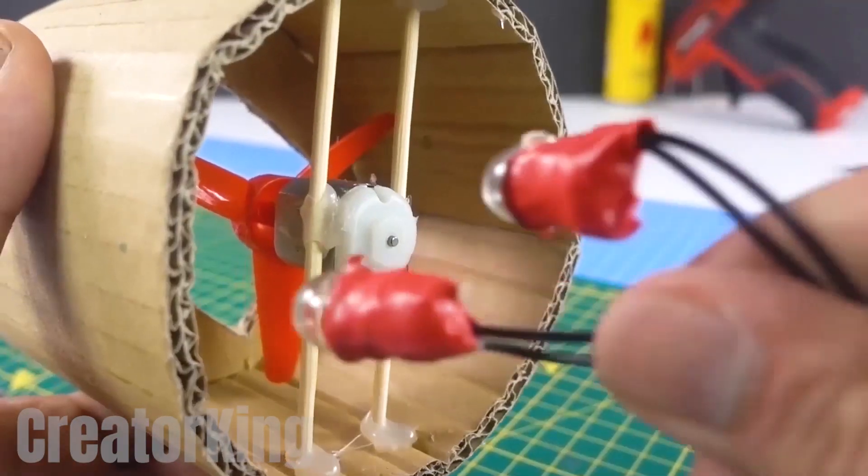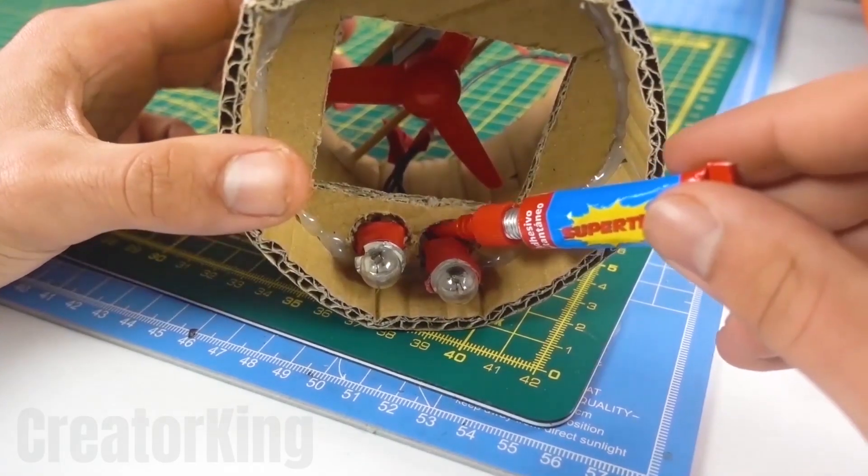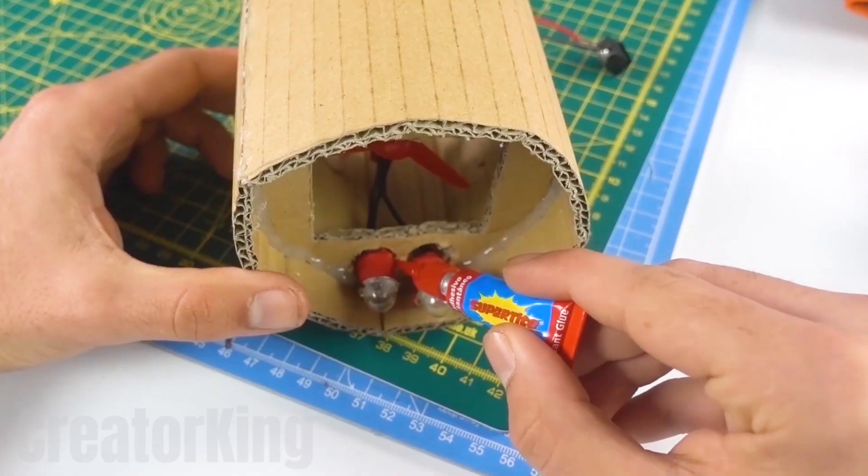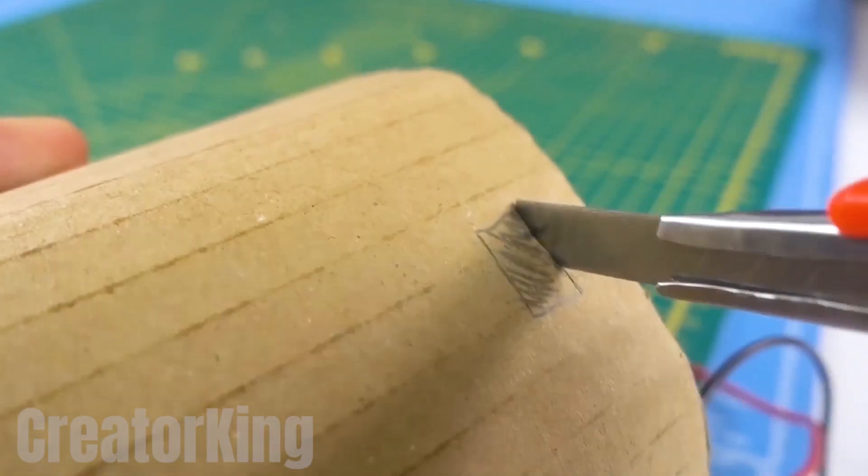Once ready, pass both light bulbs through the holes and add glue to the holes. Perfect! We're almost finished with the cables, batteries, light bulbs, and switches. We just need to organize them.